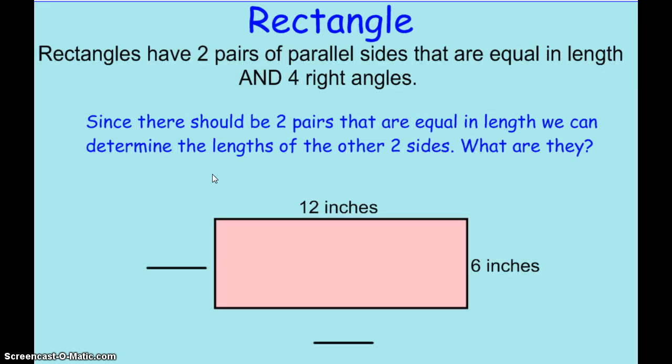What makes a rectangle different from a square is that rectangles have 2 pairs of parallel sides that are equal in length. So a rectangle does not have to have 4 equal sides.